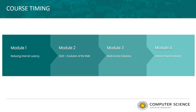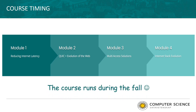Returning to the four course modules and the timing of the course: in terms of primary teaching activities, we will start with the module on reducing internet latency, then look at QUIC and evolution of the web, followed by multi-access solutions, and finally internet stack evolution. The teaching period for the spring is 20 weeks, meaning we will spend five weeks on each of these modules.